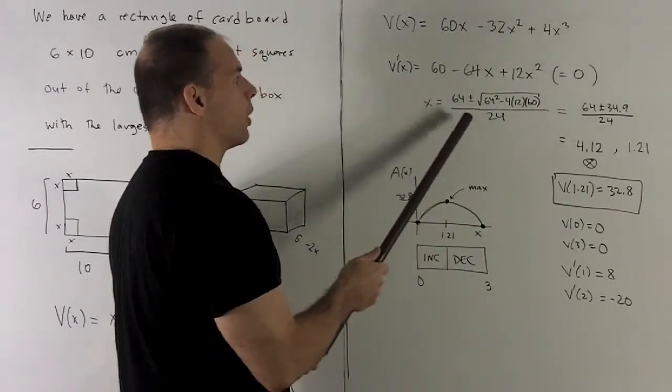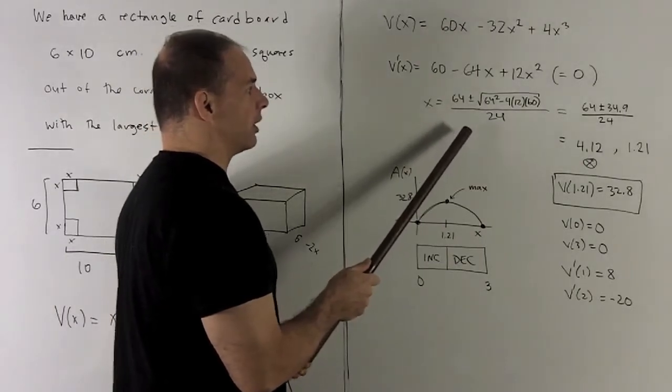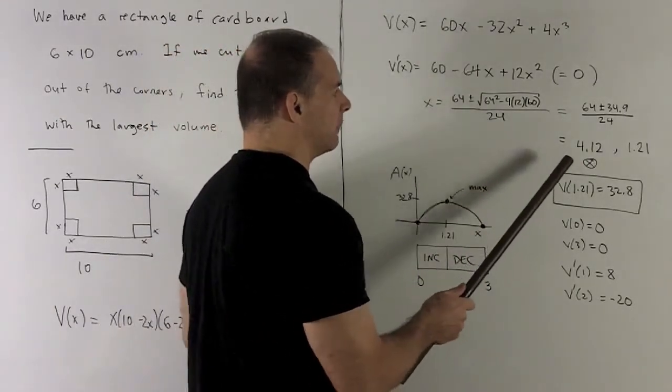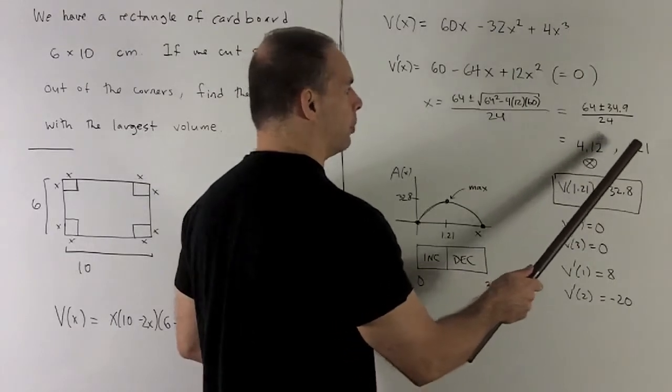To get an answer for this, we just use the quadratic equation and crunch it down to numbers. So the two candidates we'll get are going to be 4.12 and 1.21.